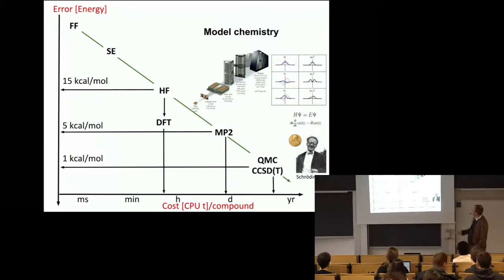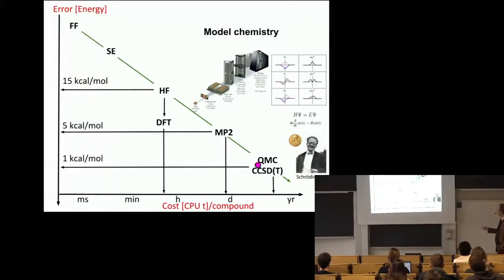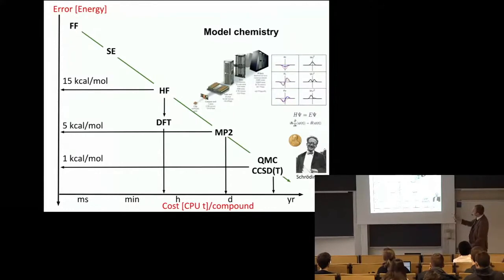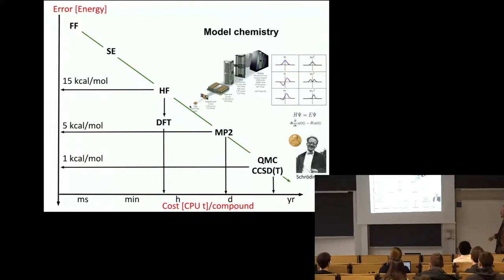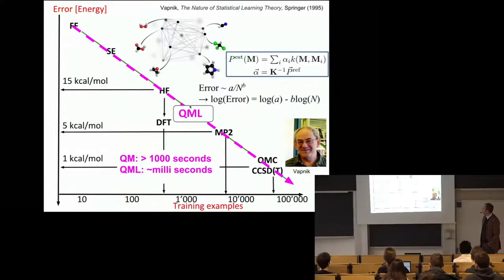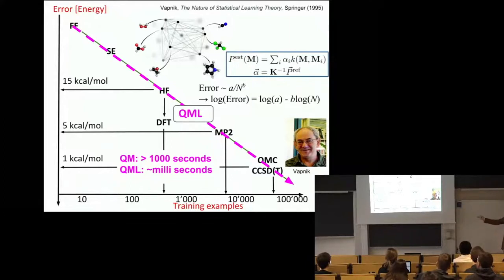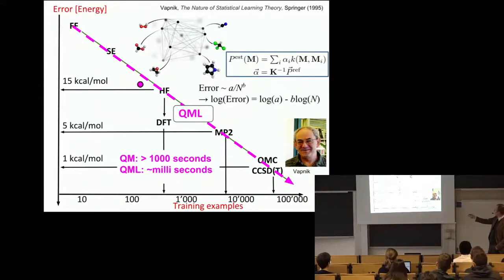In quantum mechanics, we have hierarchies of methods such as force fields, semi-empiricism, Hartree-Fock, MP2, quantum Monte Carlo, coupled cluster, or the DMRG. This is also true for basis sets. We like to think that our errors compared to experiment decay as we invest more CPU time. What I think is the real power of machine learning is that we have something similar — as you increase your training set size, the error of your machine learning method comes down. This is why I like to call it quantum machine learning. Vladimir Vapnik in the nineties showed that your prediction error decays inversely with training set size, and they already then recommended we all plot prediction errors as a function of training set size on a log-log scale.